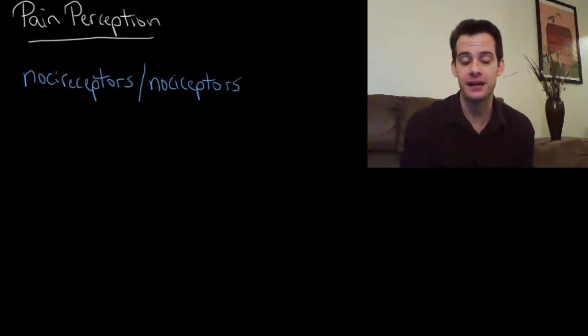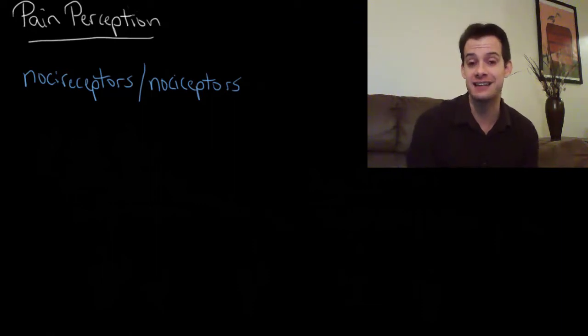In the last video on touch I mentioned that in our skin we have these things called nociceptors, and these detect pain messages. These are present not just in our skin but in other areas of our body as well. They're around our organs and our bones and they help to tell us when something's wrong.